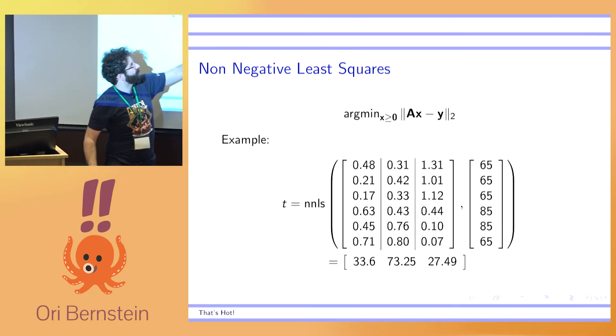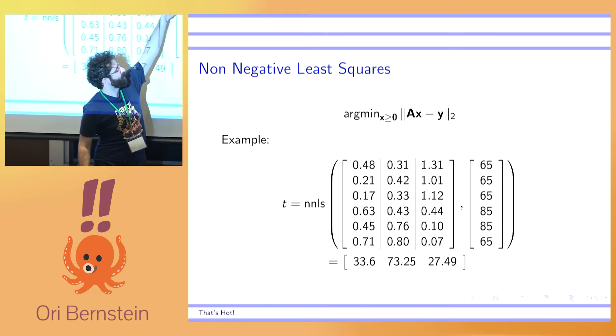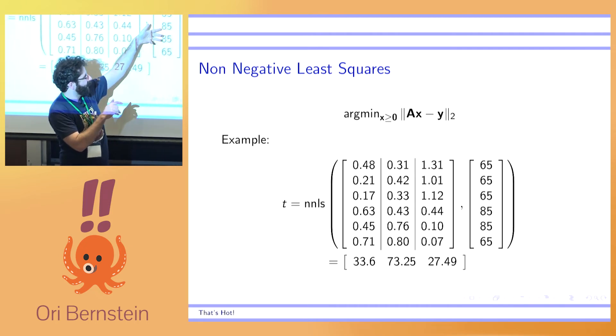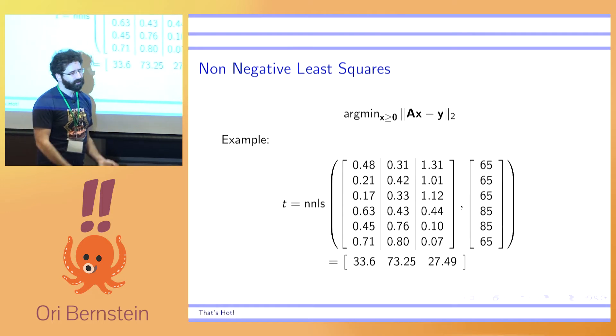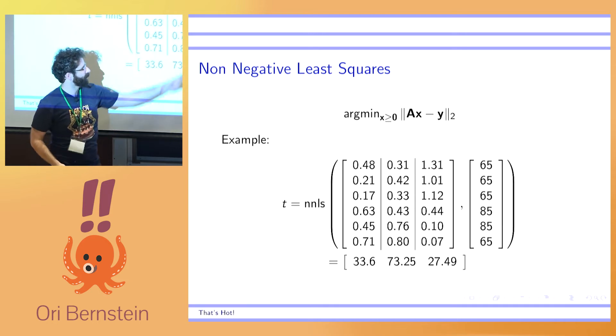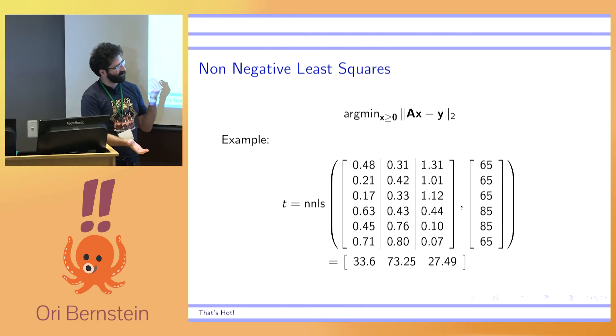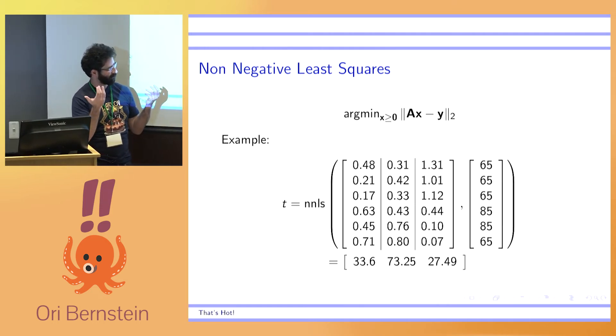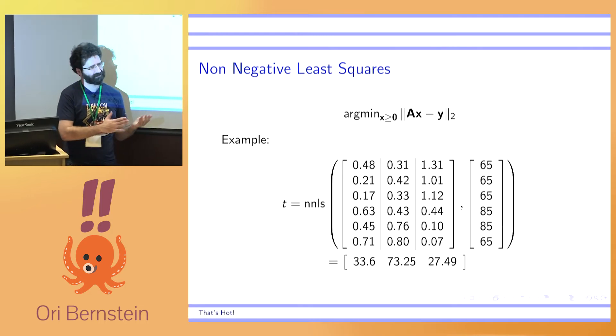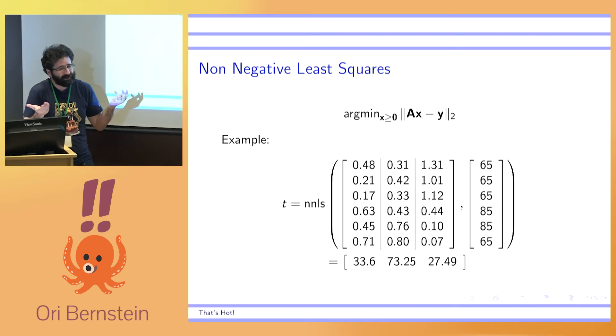So in this equation, A represents the set of all resultant vectors, the dT by dt vectors that we were talking about. x is the amount of time we spend in each configuration and y is our target temperature. So here's an example with the previous values. The first column is the first vector from above. The second column is the second vector. The third column is the third vector. And we want to get the temperature up to 65, 65, 65 in the first three squares, 85 in the other two squares, 65 in the third square. So we toss it into the non-negative least squares solver and it says spend 30 seconds in this configuration, 75 seconds in this configuration and 27 and a half in this configuration.